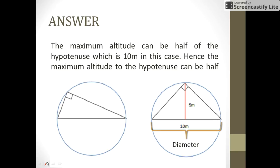The maximum altitude that can be drawn to the hypotenuse can only be equal to half of the hypotenuse. Here we are given the length of the hypotenuse to be 10 meters, and the length of the altitude that can be drawn to this hypotenuse can only be equal to half of 10, that is 5.